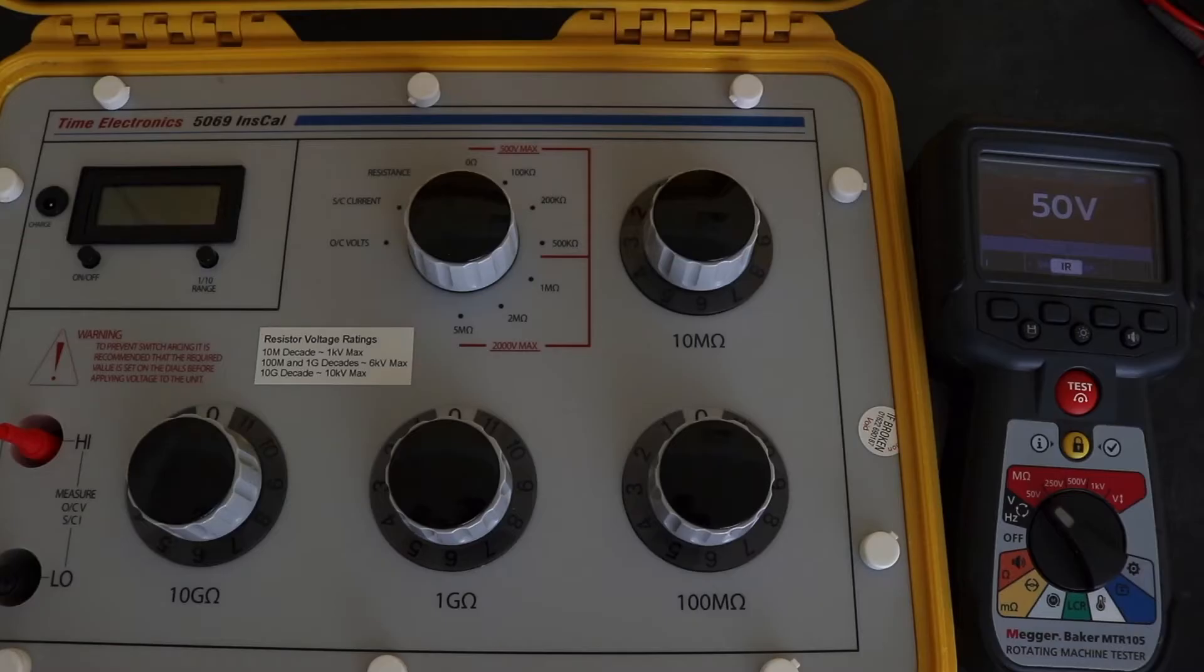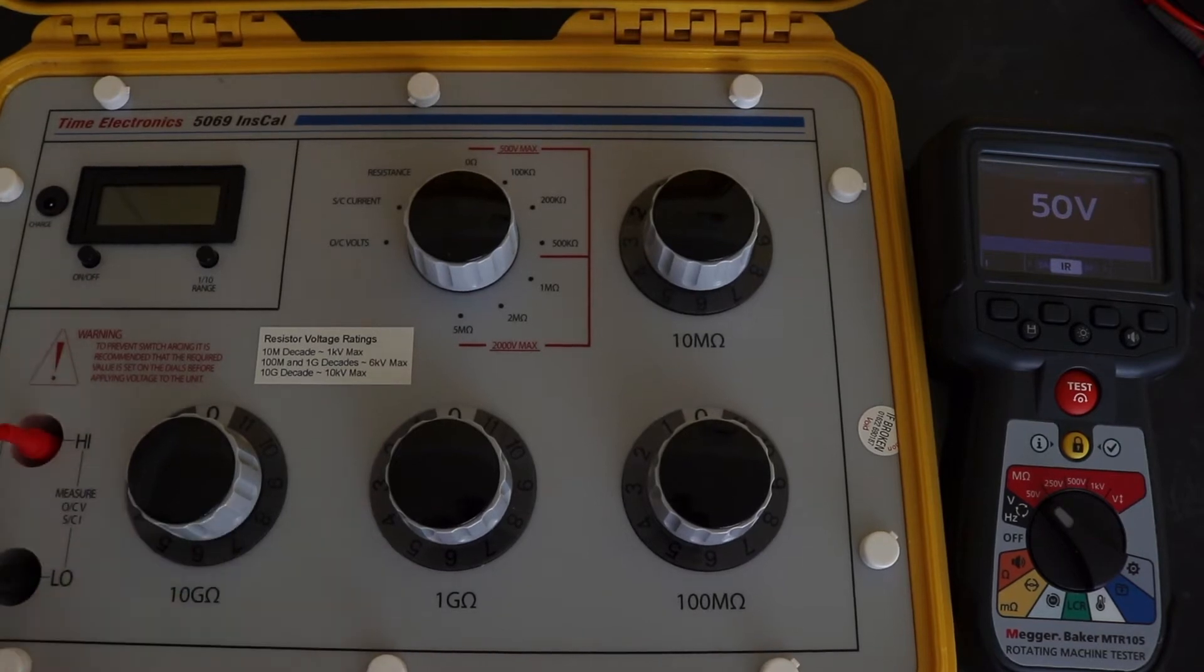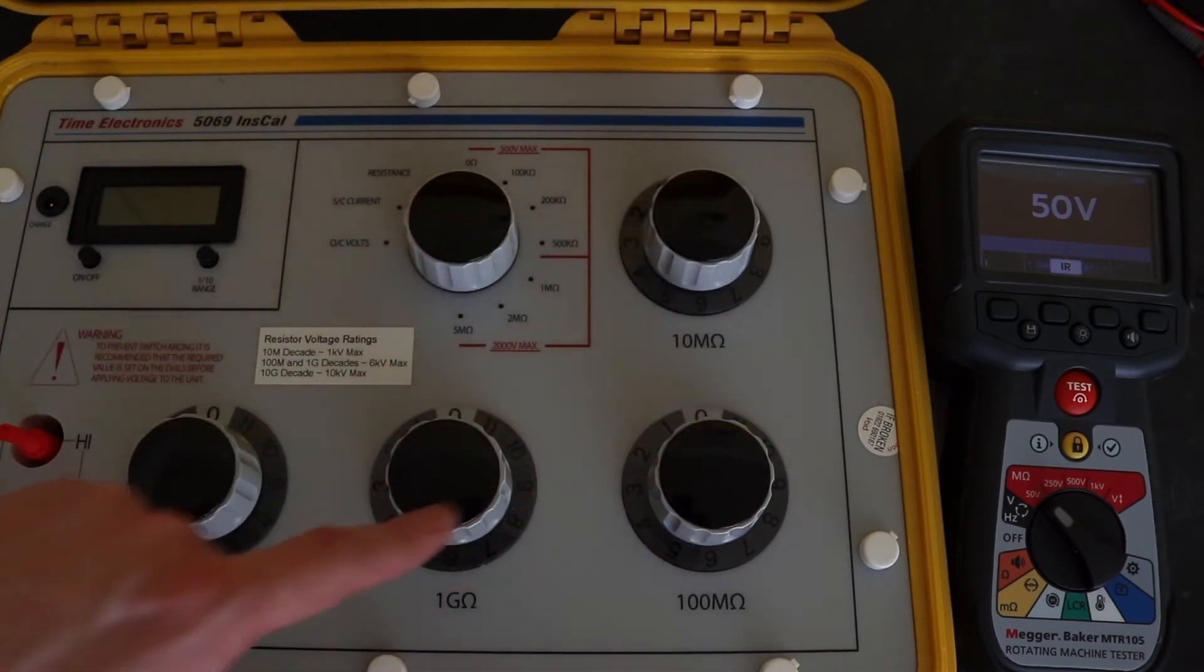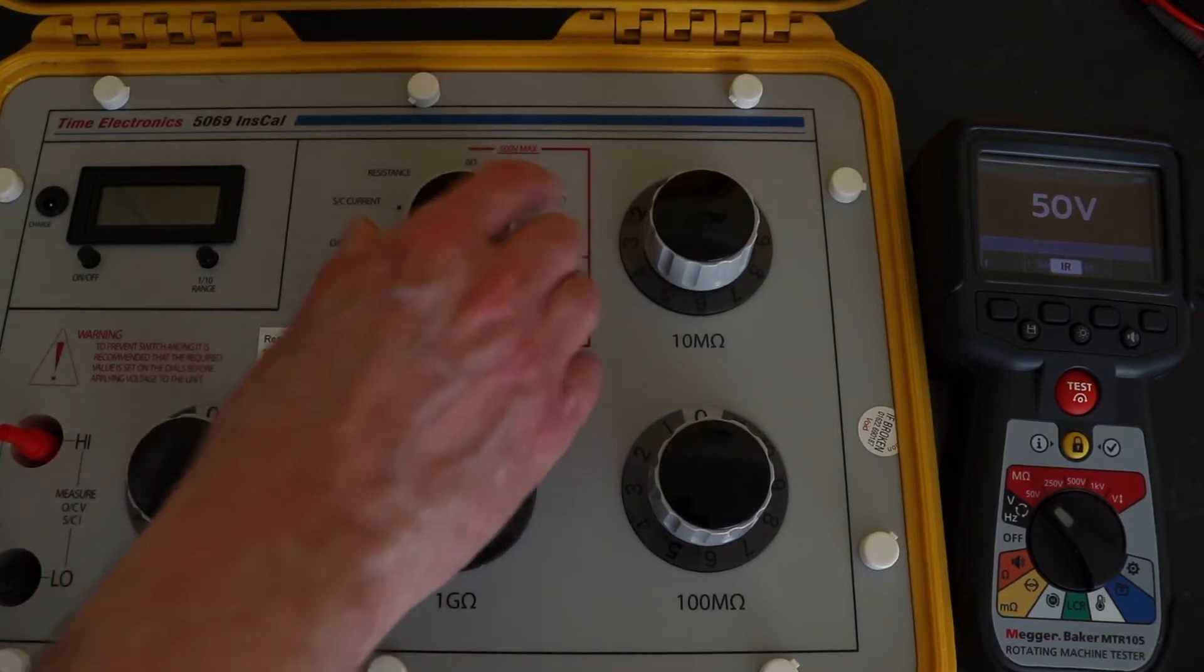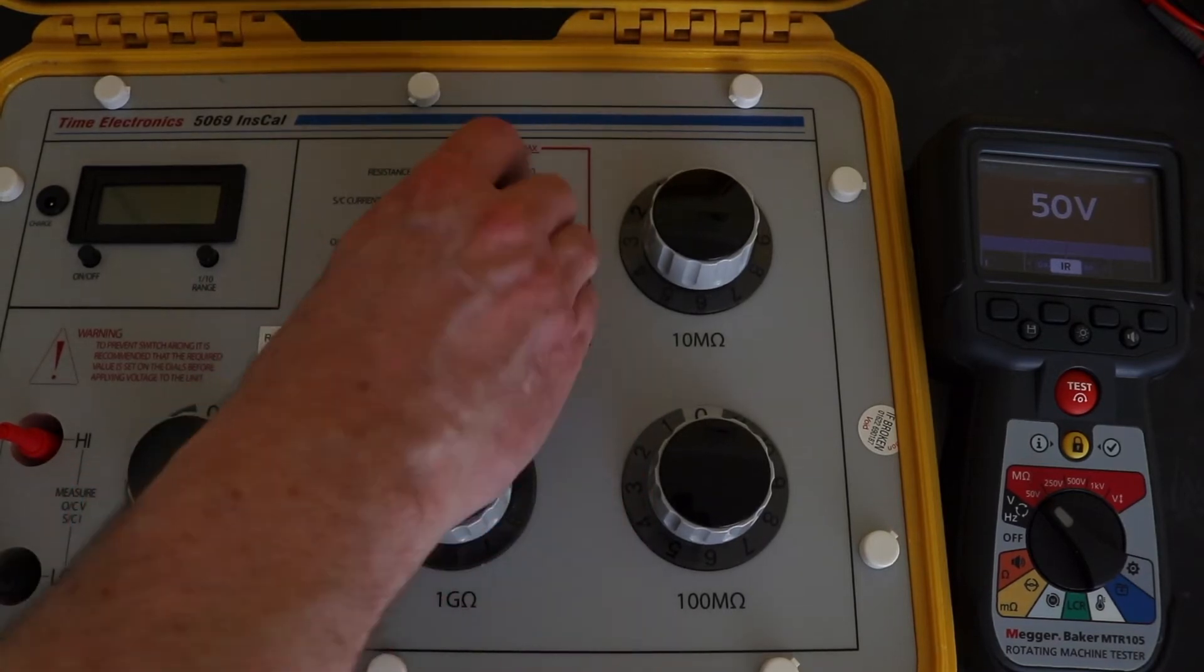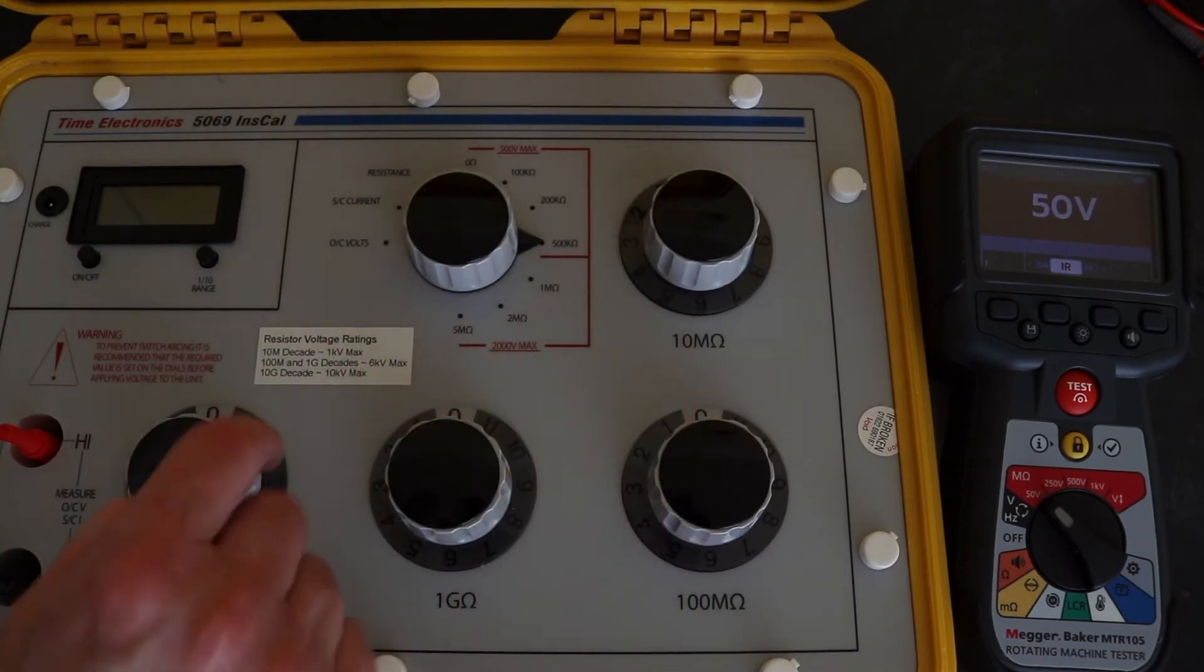Okay, so setup to carry out a resistance accuracy test on an insulation tester. The insulation tester is wired just to the input of the box over here. I set the control knob of the 5069 to resistance and then that gives me access to all of these decades to set whatever value I want to do. The alternative is to actually move this around and I have a few smaller fixed resistance values in here that I can use as an alternative to these actual decades.